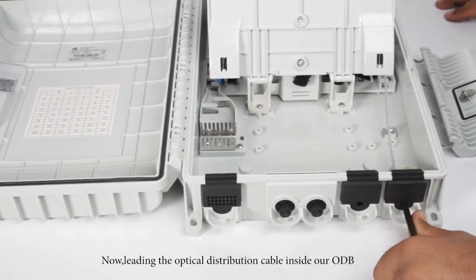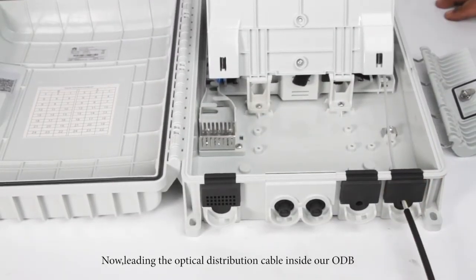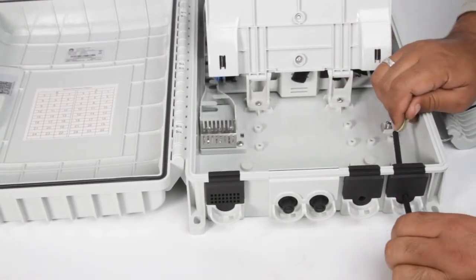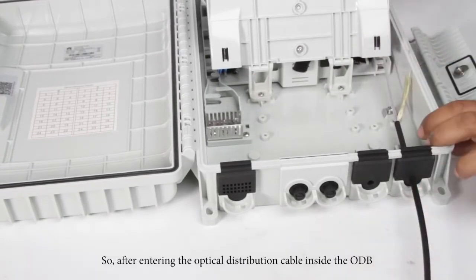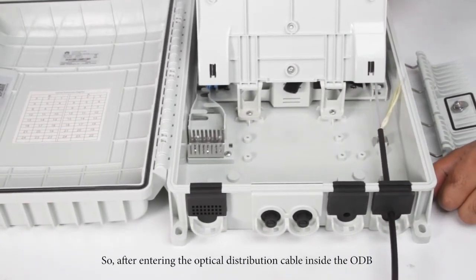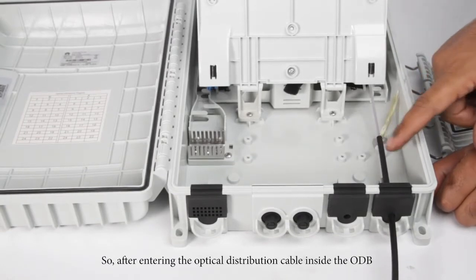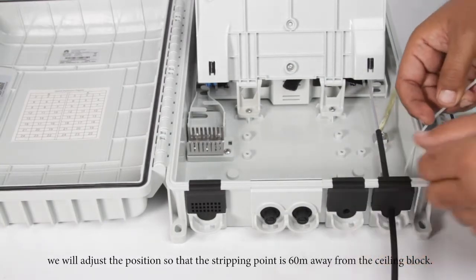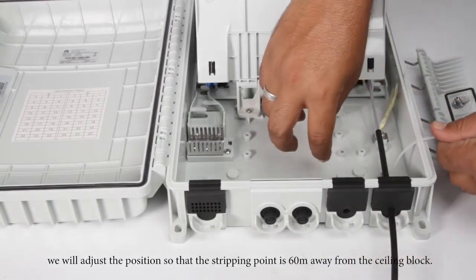Now leading the optical distribution cable inside our ODB. After entering the optical distribution cable inside the ODB, we will adjust the position of our distribution cable so that the stripping point is 60 mm away from the sealing block.